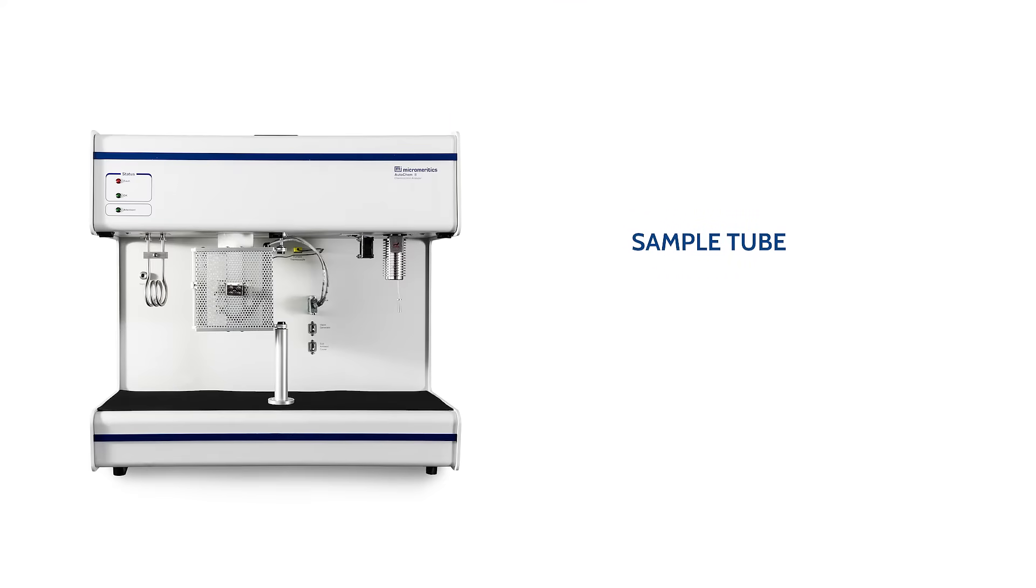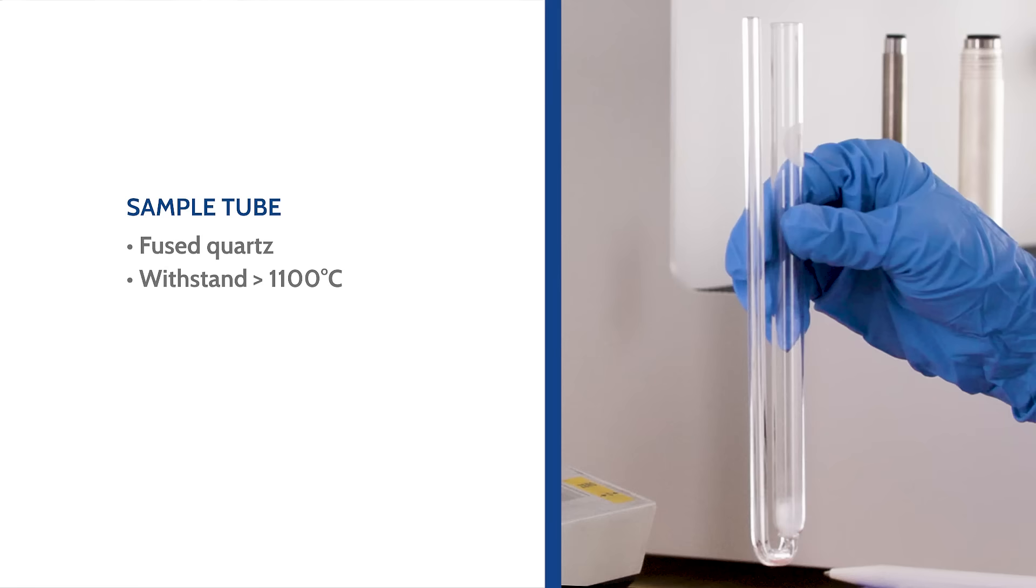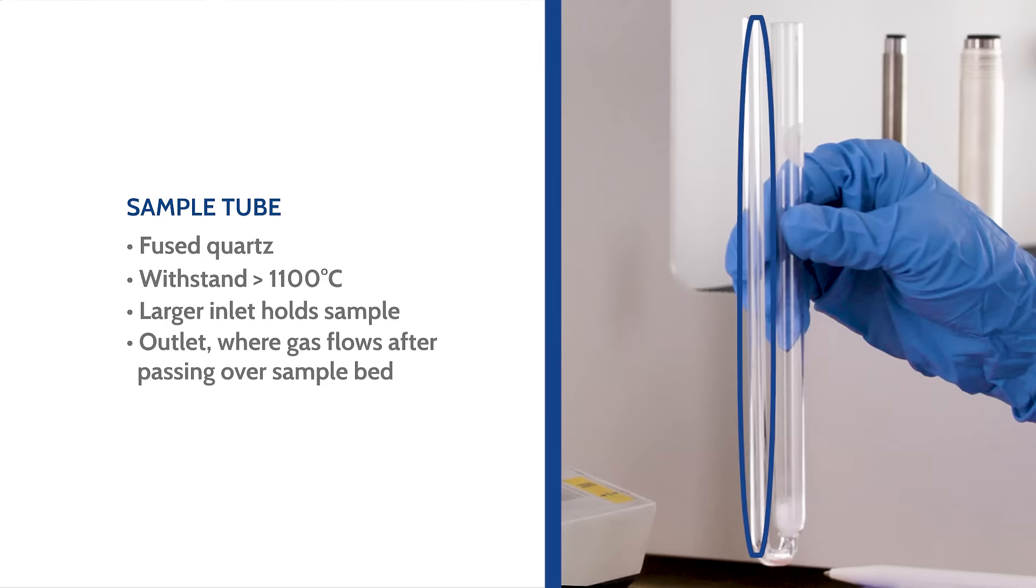The AutoChem sample tube is made of fused quartz with the capability to endure the maximum furnace temperature of 1100 degrees Celsius. It is composed of the larger inlet compartment in which the sample is loaded, and the outlet where gas flows through after it passes over the sample bed.